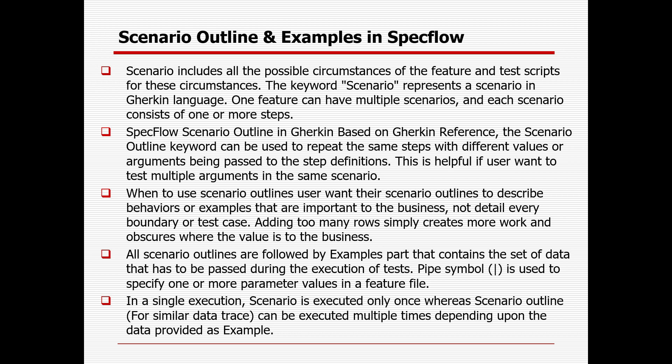This is applicable when you want to test multiple scenarios with varying data in the same feature file. When to use Scenario Outline: use it to describe behavior or examples important to the business, not to detail every boundary or test case. Adding too many rows simply creates more work and obscures where the value is to the business. All scenarios are followed by an Examples section containing the set of data to be passed during execution. A single Scenario executes only once, whereas a Scenario Outline can execute multiple times depending on the data rows provided.